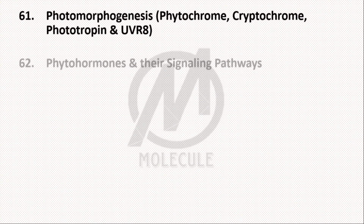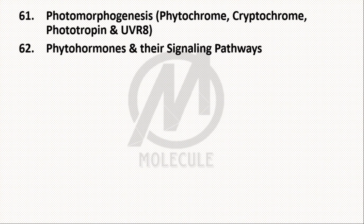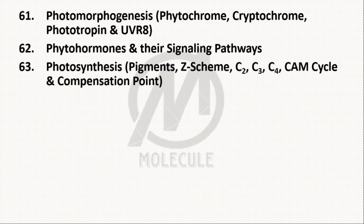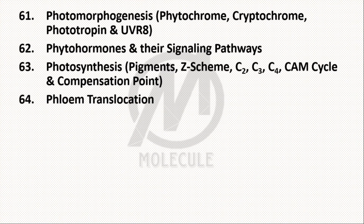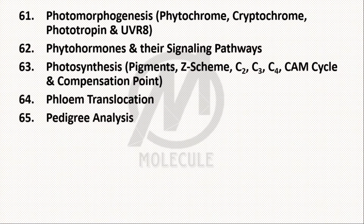Topic 62: Phytohormones and Their Signaling Pathways. Topic 63: Photosynthesis — including Pigments, Z Scheme, C2 Cycle, C3 Cycle, C4 Cycle, CAM Cycle, and Compensation Point. Topic 64: Phloem Translocation. Topic 65: Pedigree Analysis.